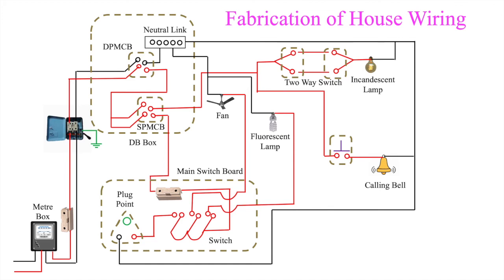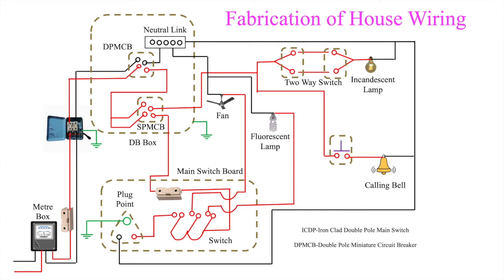For appliances where there is a chance that the metallic body can come in contact with the circuit, earthing is required. Examples include the DB box, which is made of metal and must have an earthing connection. The plug point also needs earthing — for example, if a laptop charger is connected and earthing is absent, touching the charger end may cause a shock. This is all about the fabrication of house wiring.